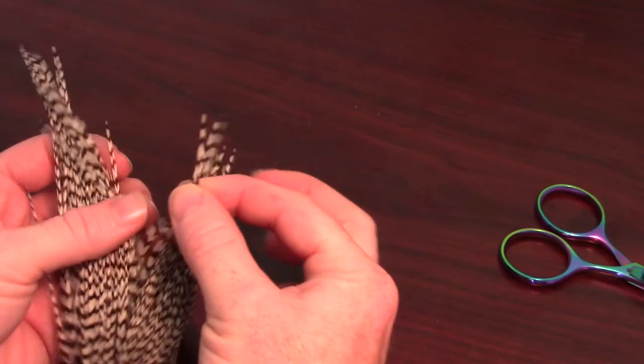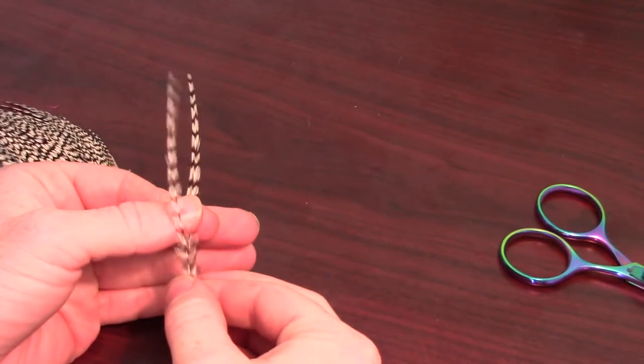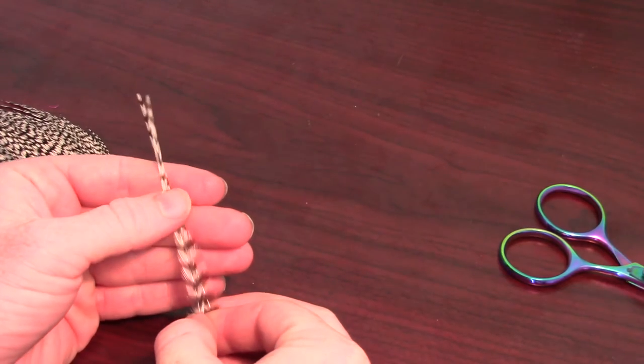After you snip off the excess thread, pull two grizzly hackles with tips that are about the same size and shape. Then put the two hackles back to back so they turn away from each other.